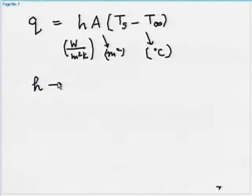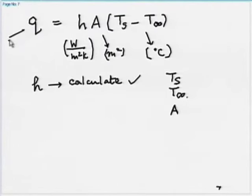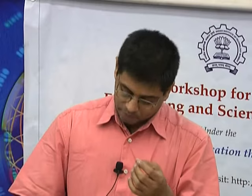H can be a very complicated function, but let us assume for now that h is a quantity we can calculate quite easily - that is not the aim of this particular topic. So h is not a problem, Ts is specified, T∞ is also specified, and A is also specified. Given h, A, Ts, and T∞, Q becomes a finite quantity that can be calculated. Depending on the application, how good or how fast the cooling needs to be has to be decided.